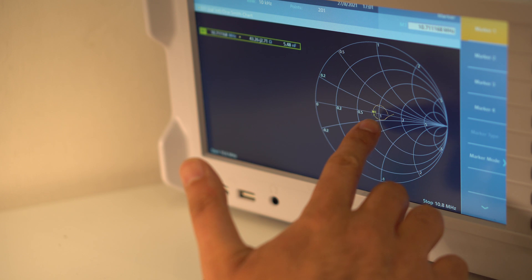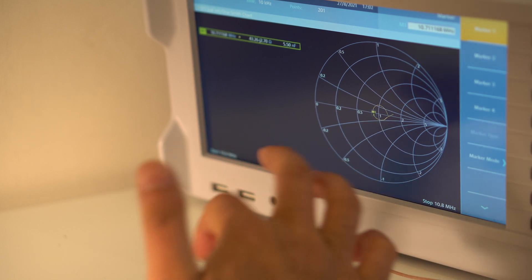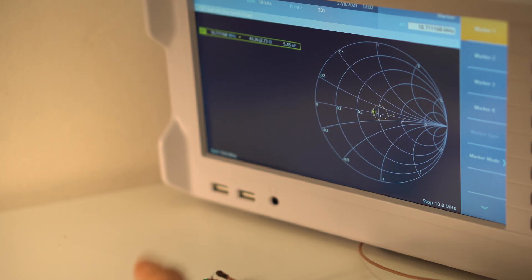So now that I know that the input of that filter is matched to 50 ohms, I can repeat exactly the same circuit now on the other side as well.